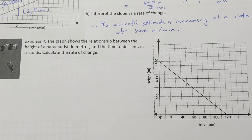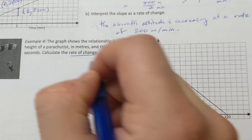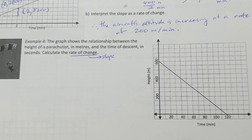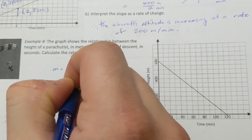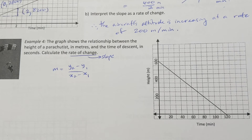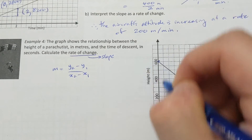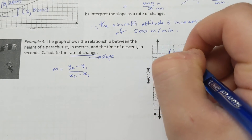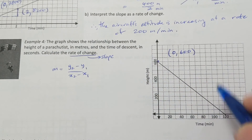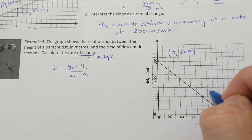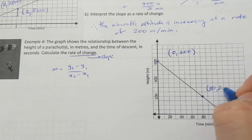The graph shows the relationship between the height of a parachutist in meters and the time of descent in seconds. We need to calculate the rate of change, which means finding the slope of the graph. Using m equals y2 minus y1 over x2 minus x1, I'll pick two points: (0, 600) and (80, 200).